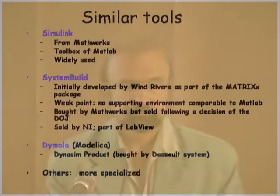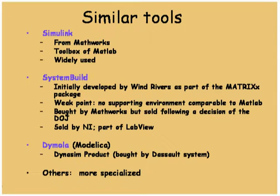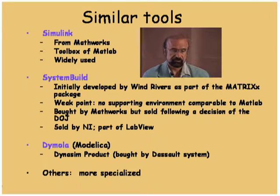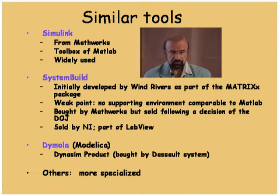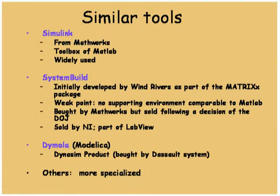What are the competing tools? Simulink from MathWorks is almost a world standard today — it's a toolbox of MATLAB, but you have to buy it separately. SystemBuild was a very good software initially developed by Wind River as part of the MatrixX package; its weak point was the environment, which was not comparable to MATLAB, which is probably why it lost to Simulink. SystemBuild was bought by MathWorks, then sold to National Instruments. Another interesting product is Dymola, based on the open language Modelica, available from Dynasim — recently bought by Dassault Systèmes — and I think Modelica has an interesting future.